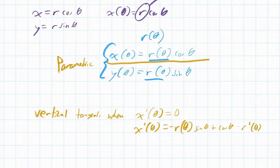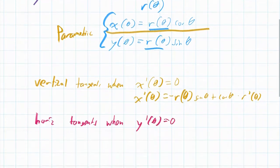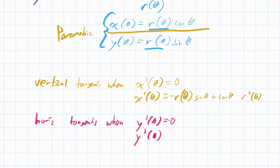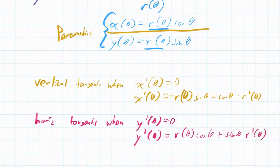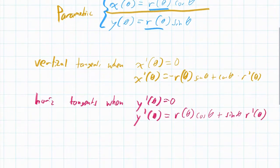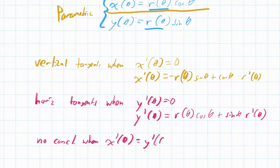For horizontal tangents, those occur when y′(θ) = 0. y′(θ) is defined by the product rule as the first times the derivative of the second: r(θ)·cos(θ), plus the second times the derivative of the first: sin(θ)·r′(θ). Note that if both x′(θ) and y′(θ) are zero simultaneously, we have no conclusion, so you have to exclude those cases.